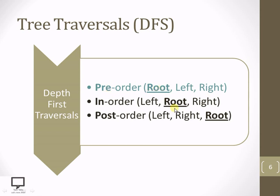In in-order traversal, we process first the left, then the root node in the middle, and then the right — that is why it is called in-order. Post-order means the root is processed after both the left and right children. These names are given according to the position of the root node, and because it goes in depth, this type is called depth first traversal.